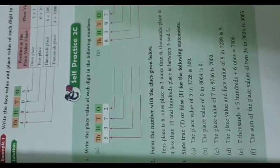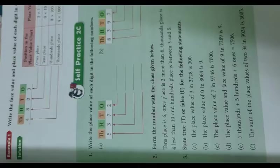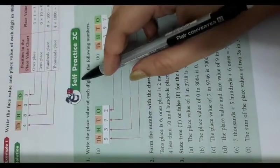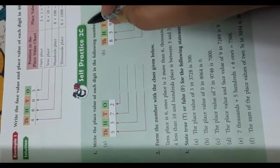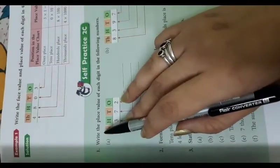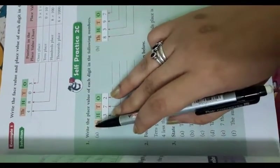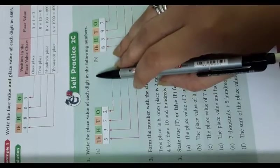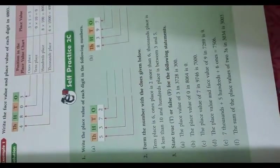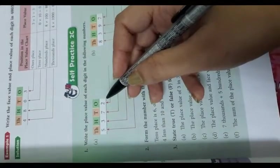Hello students, today we are going to start Math Exercise 2C. The first question is: write the place value of each digit in the following numbers.